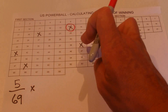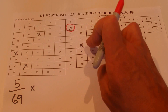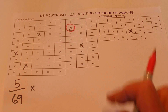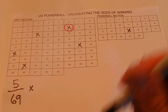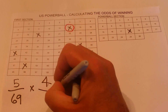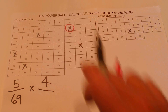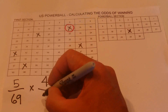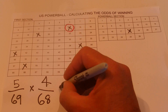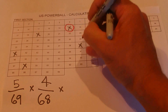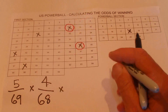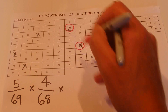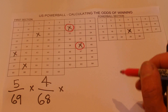When the next ball is selected, on your grid you've still got four numbers left out of 68 — because one number has already come out of the drum, leaving 68 balls remaining. So you've got four chances in 68 of the second number being one of your five selected numbers.